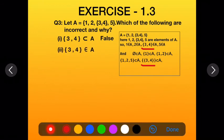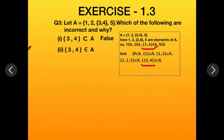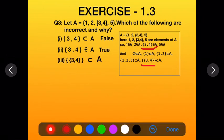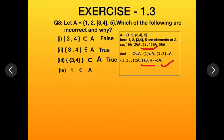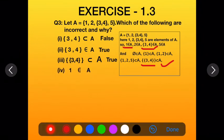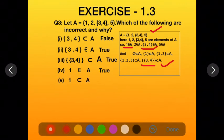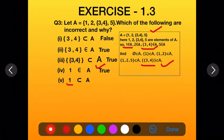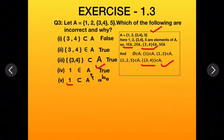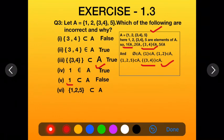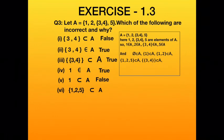Second part: {3, 4} ∈ A. Yes, this is true because {3, 4} is an element of A. Third part: {{3, 4}} ⊆ A — we just explained this; using double brackets makes it a subset, so this is true. Fourth part: 1 ∈ A — 1 is an element of A, so this is true. Fifth part: 1 ⊆ A — to be a subset, 1 should be written in curly brackets as {1}. Since it is not, this statement is false. Sixth part: {1, 5} ⊆ A — since 1 and 5 are both elements of A, this is true.